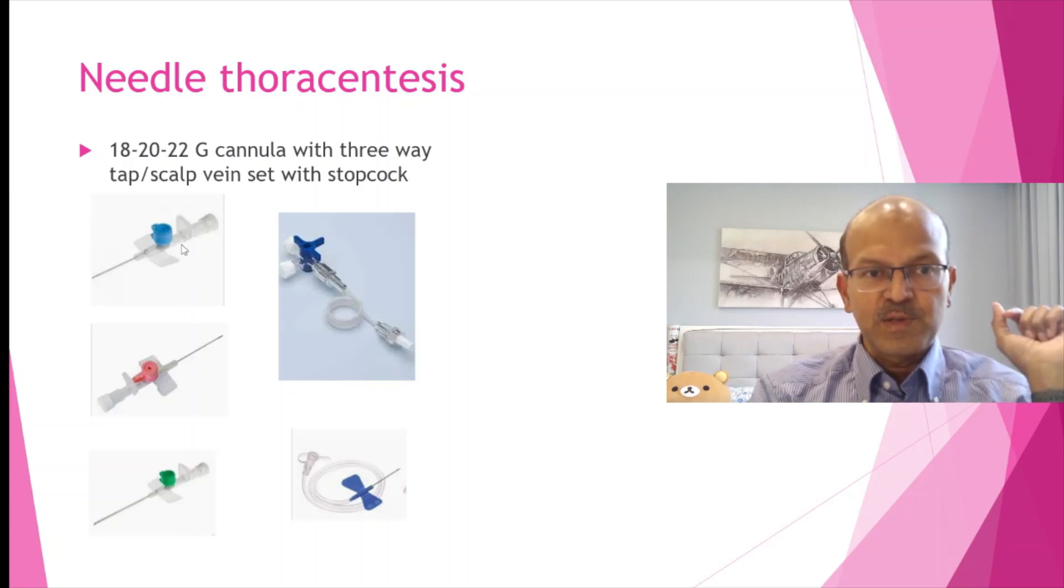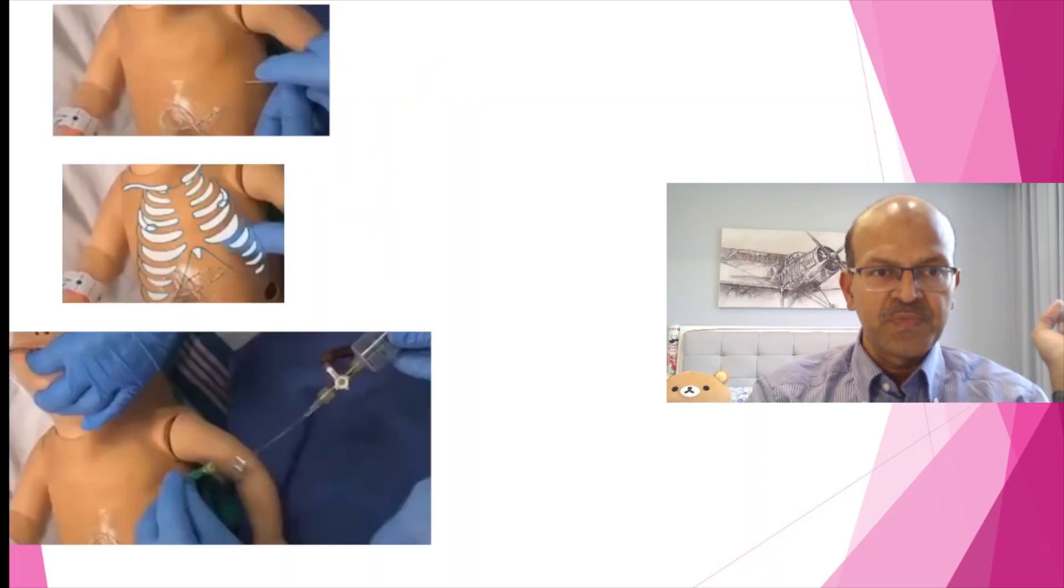We have different sizes: the 22 gauge blue venflon, the 20 gauge pink one, and the 18 gauge green one. According to the size of the baby and the extent of the pneumothorax, you can use any of these. We have these stopcock connectors which will be very helpful to drain. This will connect to the venflon after you remove the needle out, and the stopcock will help you drain the air out. You don't need underwater seal because the moment you put the needle in, the air gushes out, and by the time you can secure the three-way tap and aspirate with a syringe.